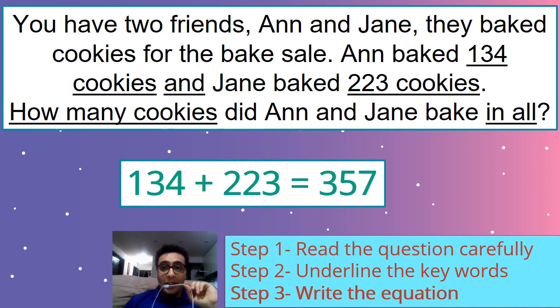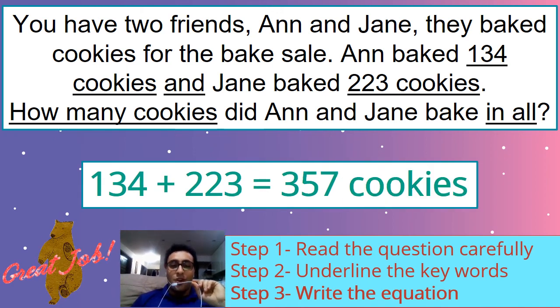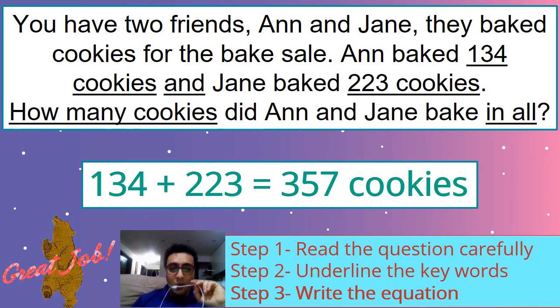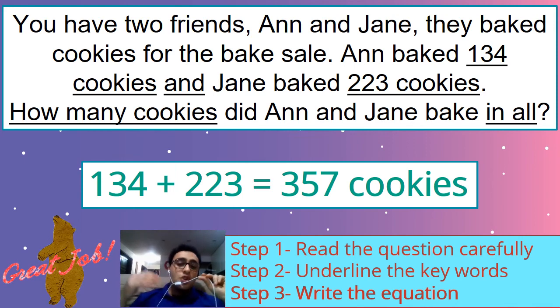So the answer is three hundred fifty-seven. Right? Yes, you are correct. But don't forget, you have to write something here. What do we have to write? I don't know. Look at how many. How many? Cookies. So you have to write cookies here. Boom. Three hundred fifty-seven cookies. Great job, guys.